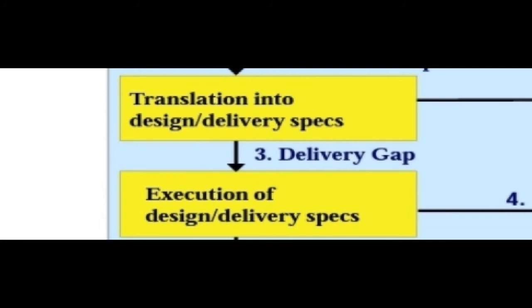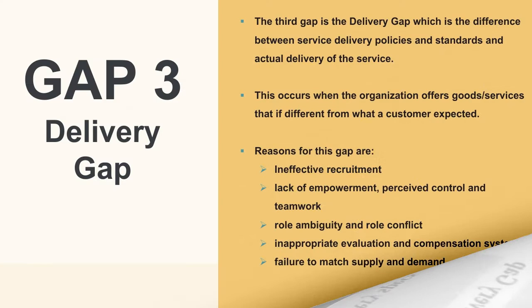Gap number three is the delivery gap — the difference between the service delivery policies and standards and the actual delivery of the service. This occurs when an organization offers goods or services that differ from what the customer expected. Reasons include inefficient recruitment, lack of empowerment, perceived control and teamwork issues, role ambiguity or role conflict, inappropriate evaluation and compensation systems, and failure to match supply and demand.